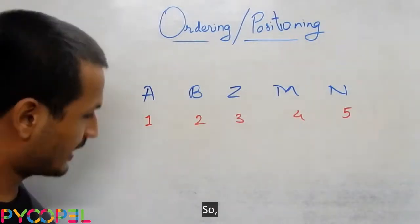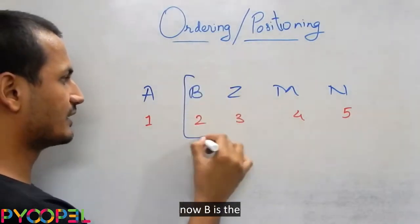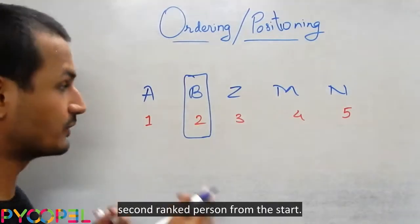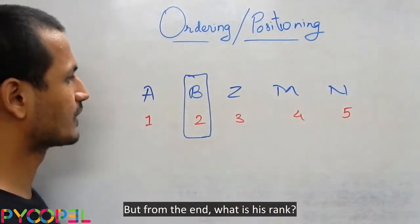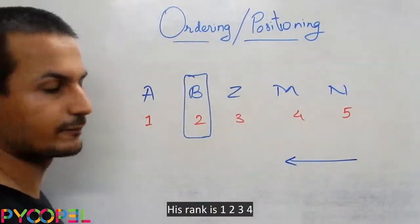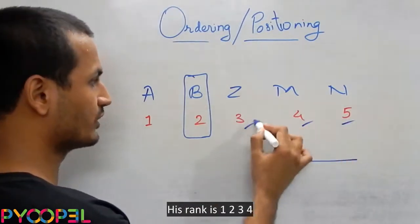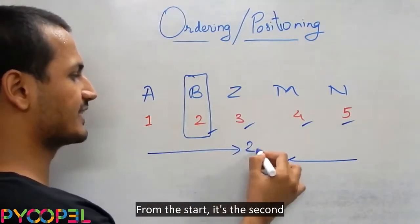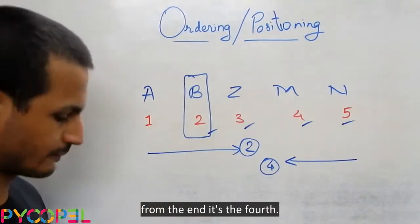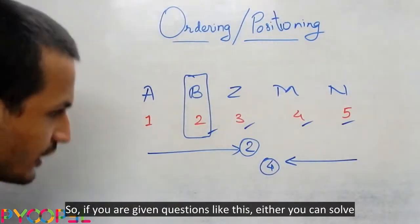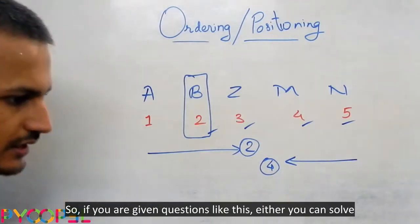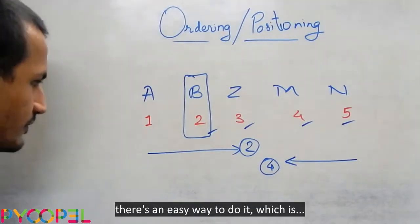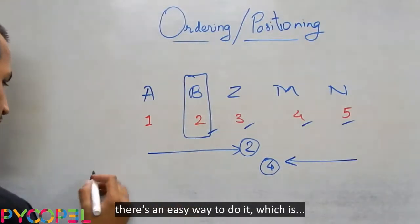So now B is the second ranked person from the start. But from the end, what is his rank? His rank is one, two, three, four. From the start it's the second. From the end it is the fourth. So if you have given questions like this, either you can solve it mentally or there is an easy way to do it.